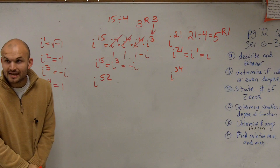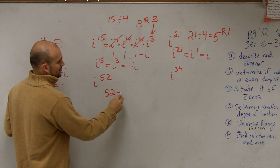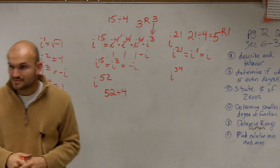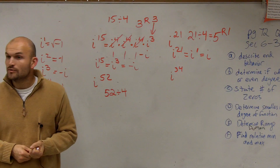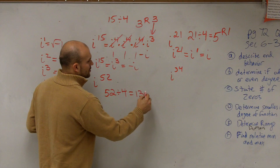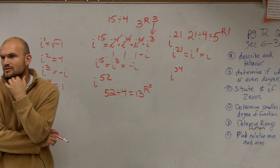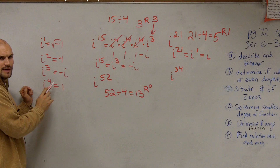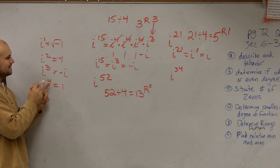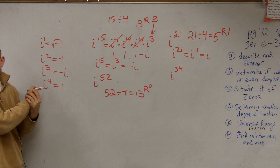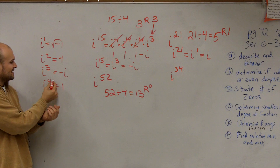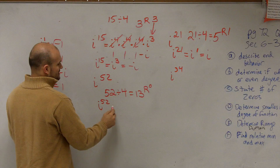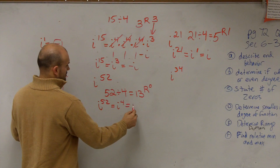Now let's look at i to the 52nd. Take 52 divided by 4 — that's 13 with no remainder, remainder of 0. If something divides evenly by 4, that's the same as a remainder of 0, which corresponds to i to the fourth. So i to the 52nd equals i to the fourth, which equals positive 1.